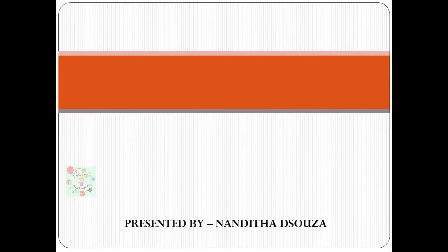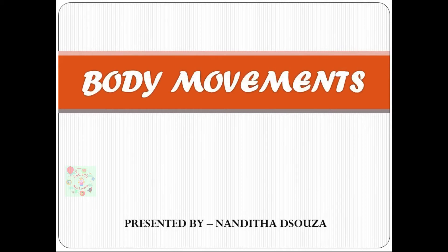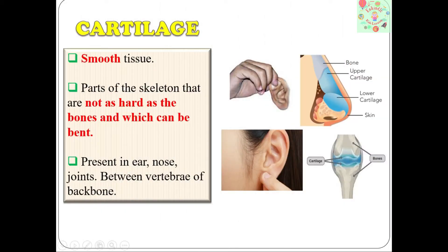I'm presenting the last part of the lesson: Body Movements. Let's get started. In the last video, we learned about the skeleton system — it comprises many bones and joints. There are some additional parts of the skeleton that are not as hard as bones and which can be bent.